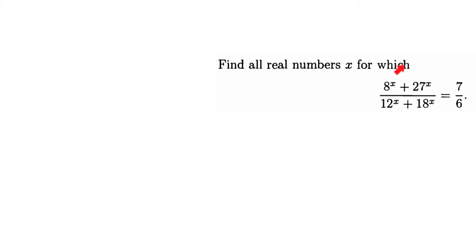Find all real numbers x for which (8^x + 27^x) / (12^x + 18^x) = 7/6. We need to find all values of x satisfying this equation. If we substitute x=1 we can see 35/30 = 7/6, but we are not sure there are other solutions because we have to find all real numbers x.